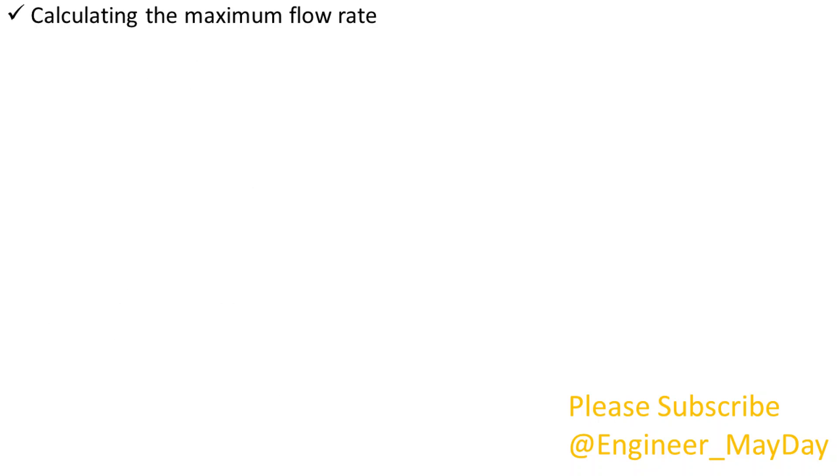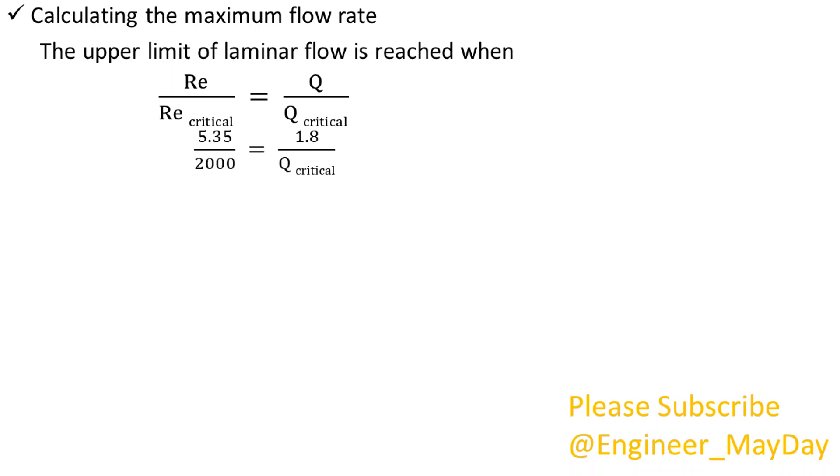Calculating the maximum flow rate. The upper limit of laminar flow is reached when Reynolds number over critical Reynolds number is equal to flow rate over critical flow rate. Substituting the respective values we get 672 liters per minute.